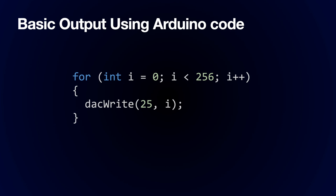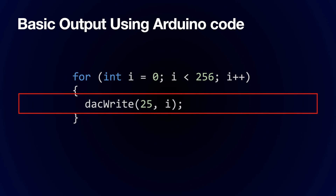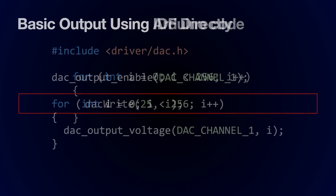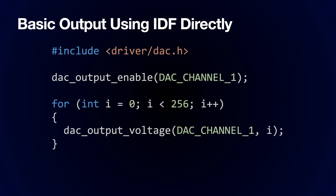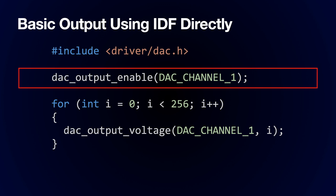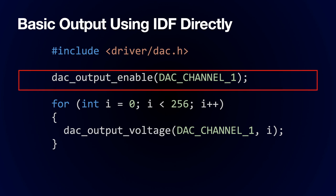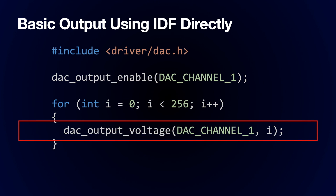Basic output using Arduino code is pretty straightforward. We just use the DACWrite function, specifying pins 25 or 26 along with the value that you would like to send. If you want to stick to the IDF functions, this is also very straightforward — you just need to enable the DAC channel and then call DAC output voltage. DAC channel 1 outputs on pin 25 and DAC channel 2 outputs on pin 26.